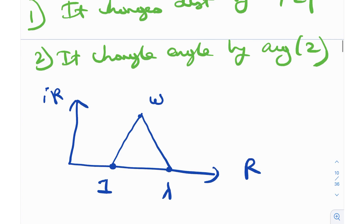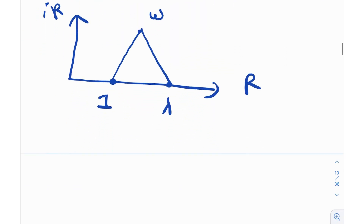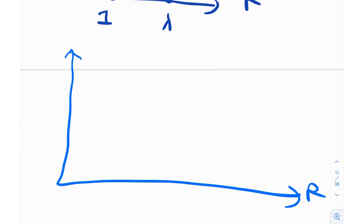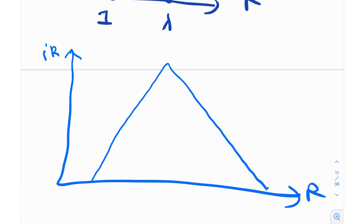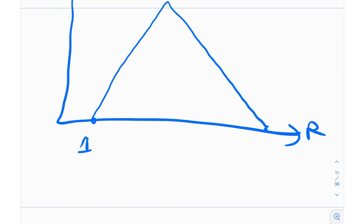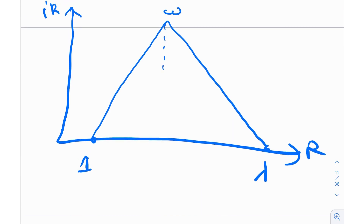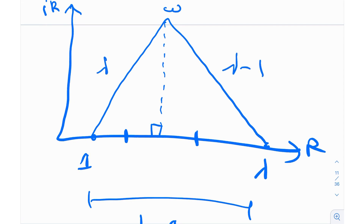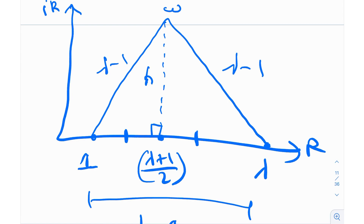Let me draw a better diagram. We have the real axis and imaginary axis. The point 1 is at coordinate (1, 0) and lambda is at (lambda, 0). The side length of the equilateral triangle is lambda minus 1. Drawing the perpendicular from omega to the base, this height is h. The midpoint of the base is at coordinate (lambda plus 1) over 2 by the midpoint theorem.